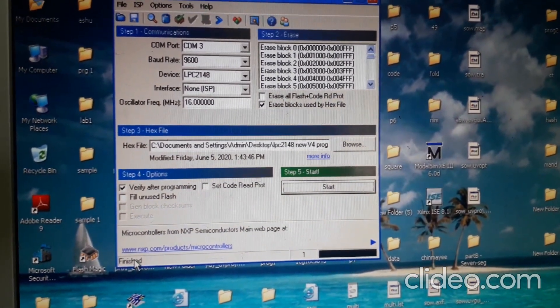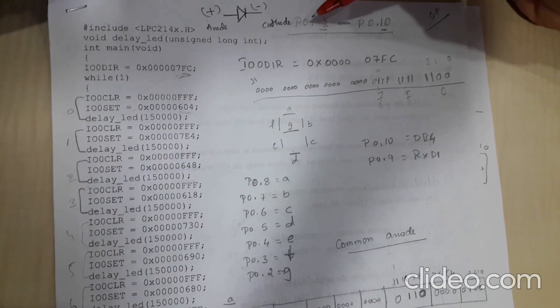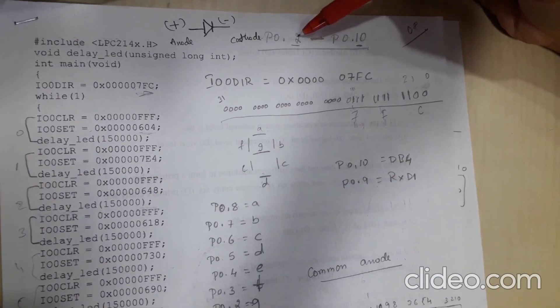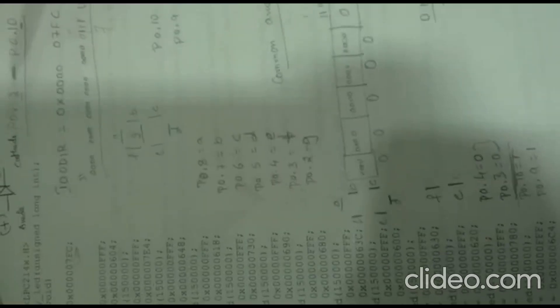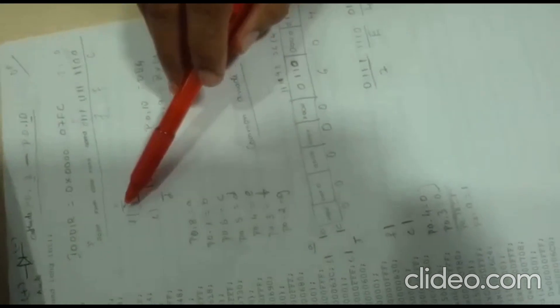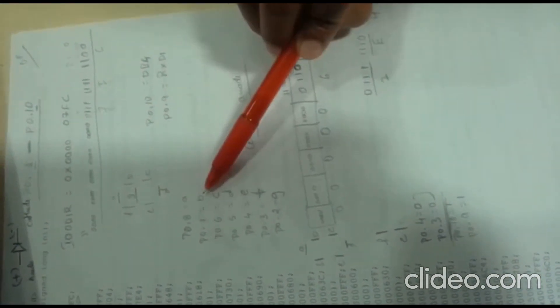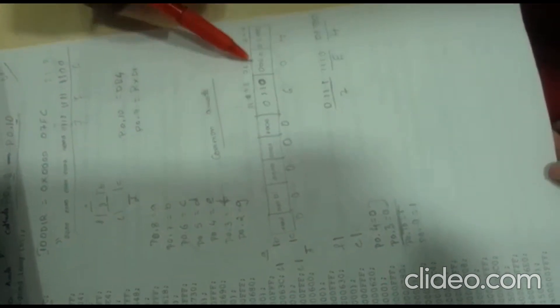Once you get 'Finished', the output can be checked on your kit. We are using pin numbers 2 to 10. The segments A to G are mapped to bits 2 through 10 — A is bit 8, B is bit 7, and so on down to G which takes bit 2.